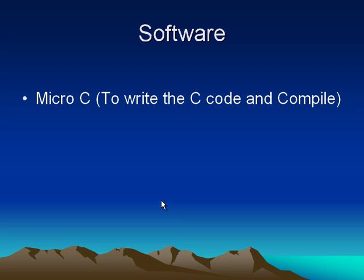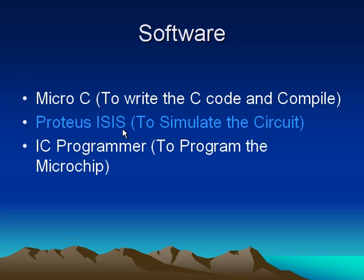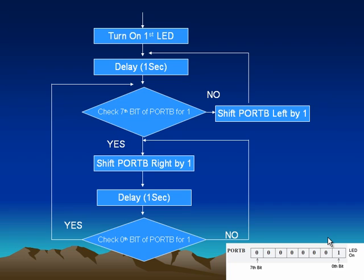Now let's see what software we are going to use. We are implementing this project using C programming language, so we are going to use MicroC to write and compile the code. To simulate the circuit I am using Proteus ISIS Professional Edition — it is not a requirement, only used to simulate the circuit. We also use an IC programmer to program the microcontroller with the compiled version of our project.